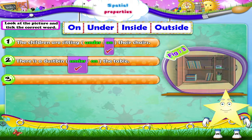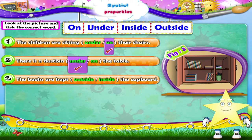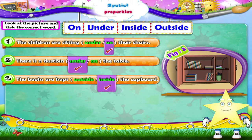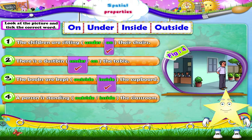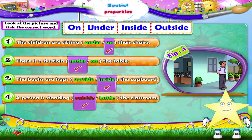The books are kept outside or inside the cupboard. Starry, the correct word is inside. The books are kept inside the cupboard. A person is standing outside or inside the classroom. Can you answer this one? A person is standing outside the classroom.